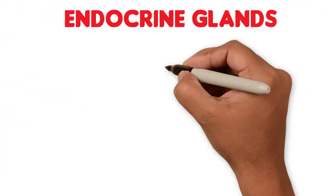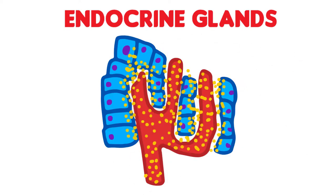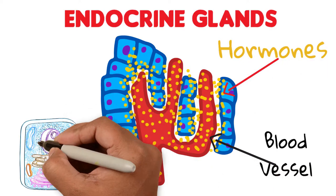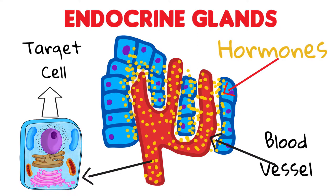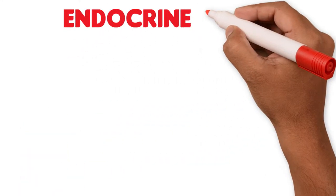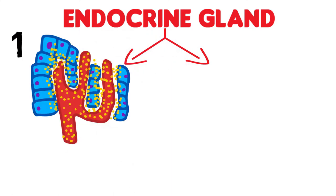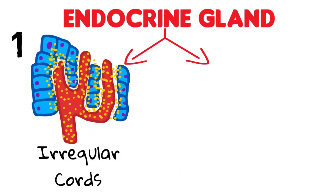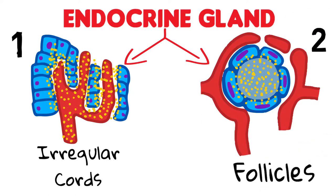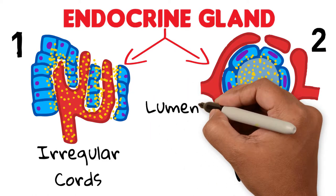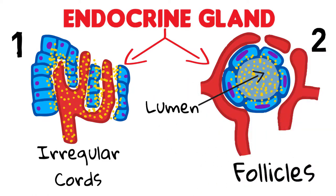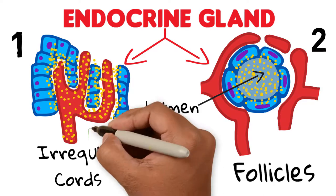The secretory cells of endocrine glands produce hormones that travel in the blood and cause a reaction on target cells that can be far away or close to the endocrine gland. These secretory cells can be arranged in two ways: number one, in irregular cords around the capillaries, where their products get absorbed as soon as they are secreted; or number two, as rounded follicles that form a circle creating a lumen for temporary storage of the secretory product so it can be absorbed later by the capillaries.